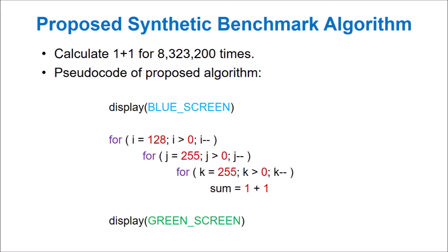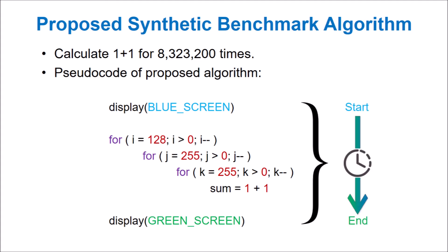The loop will add 1 plus 1 during each iteration. After all of the calculations are finished, the console will display a green screen, indicating that the test is complete. By measuring the time it takes the screen to change from blue to green, we can determine the runtime for each console.